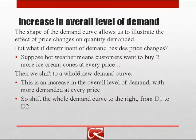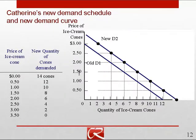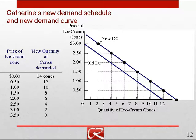We're going to go ahead and draw a whole new demand curve based on that new information. This higher overall level of demand is going to have a demand curve to the right of our old demand curve. On this slide I've got the price of ice cream cones and a new quantity of ice cream cones demanded. At each price we have two additional ice cream cones demanded due to the hot weather. When we graph that data, here is our old demand curve, and our new demand curve is to the right because at every price there's two more.